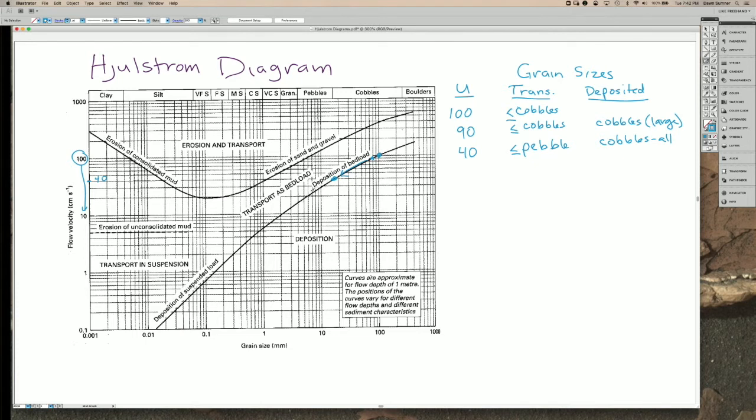So flow speed goes down even more, say to 20 cm per second, which is about in here. We have everything that's finer than small pebbles being transported and we have pebbles being deposited.